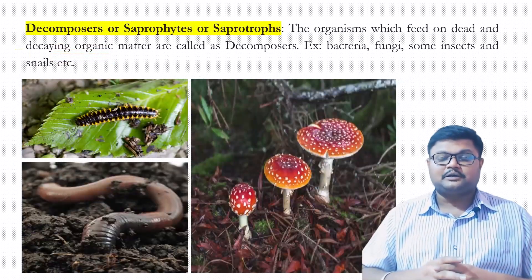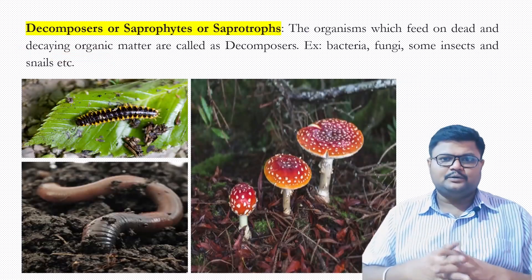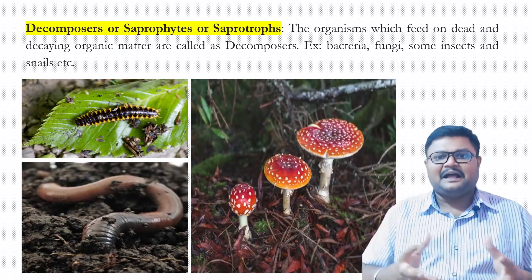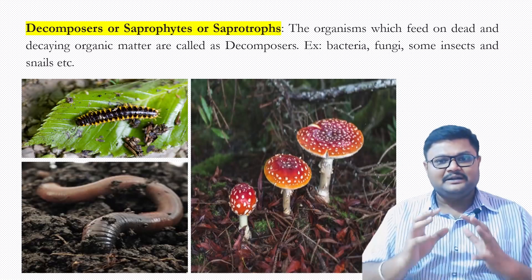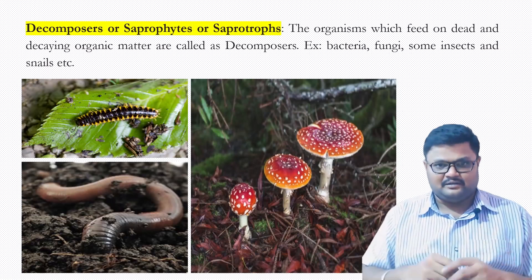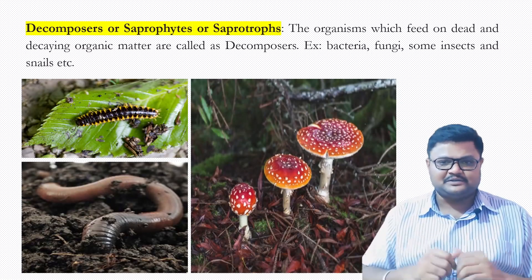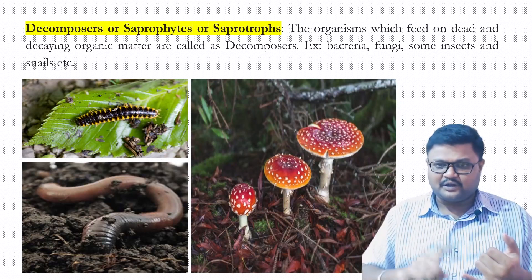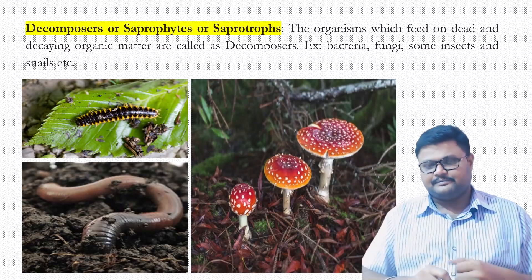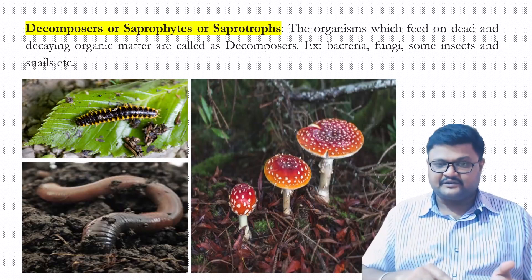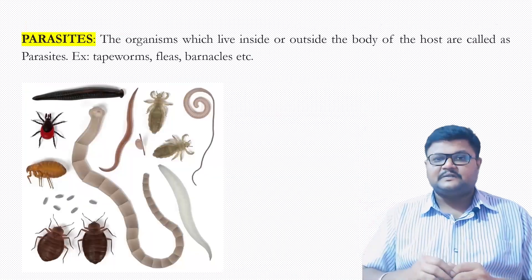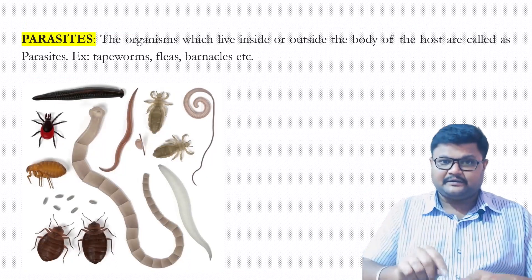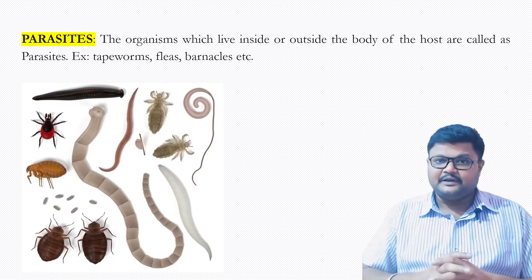The next topic is decomposers, saprotrophs, or saprophytes. The organisms which feed on dead and decaying matter are called decomposers. In other words, these organisms are also called saprotrophs or saprophytes.